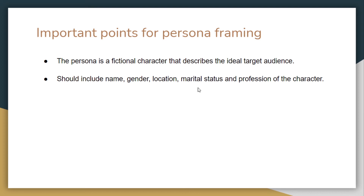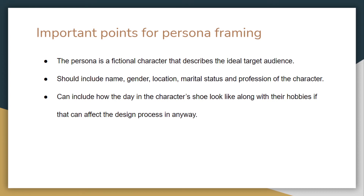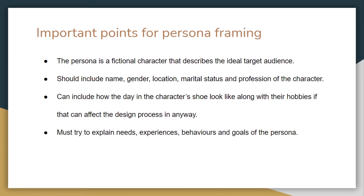A persona should include name, gender, location, marital status, and profession, because each variable can be a significant factor in UI design. A single person will behave differently than a married person, and profession matters too — a very busy professional may have less time to interact with the website. These things affect our design. You can add or remove variables as you see fit. We can also include how a person's typical day looks and their hobbies, since hobbies can affect UI design as well.